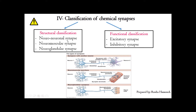According to their structure, we have the neuro-neuronal synapse — the synapse between two neurons, a pre-synaptic neuron and a post-synaptic neuron. As you can see in this photo, we always have a pre-synaptic neuron that emits the message and a post-synaptic neuron that receives the message. The terminal buds of the pre-synaptic neuron synapse with the dendrites or the cell body of the post-synaptic neuron.